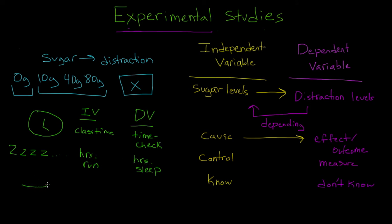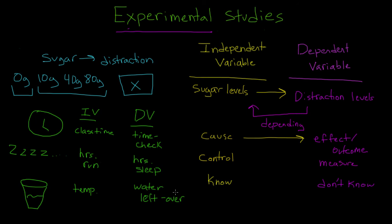Let's do one more. Let's look at how room temperature affects the amount of water that people drink. In this case, my independent variable would be room temperature, which I can set and have control over. And my dependent variable would be how much water the participants drank — maybe measured by the amount of water left over in a pitcher at the end of the study. The temperature is causing how much water a participant drinks. We are controlling the temperature and measuring the amount of water left over in the pitcher. We know what the temperature is because we set it, but we don't know how much water they're going to drink, and that's why we're trying to study it.